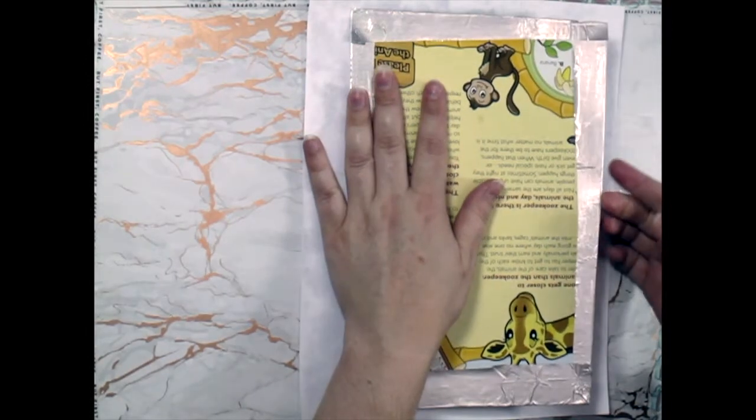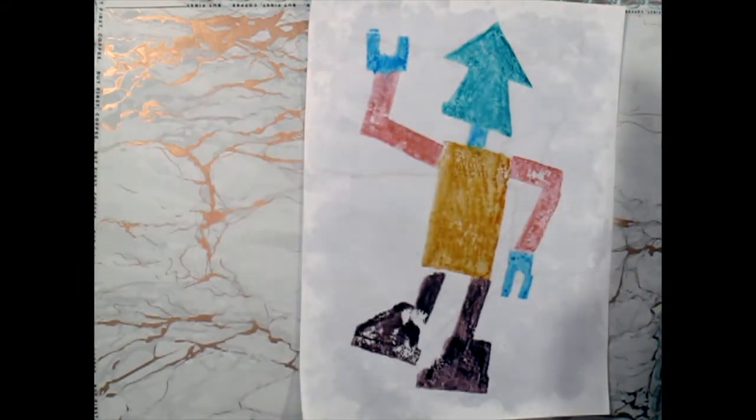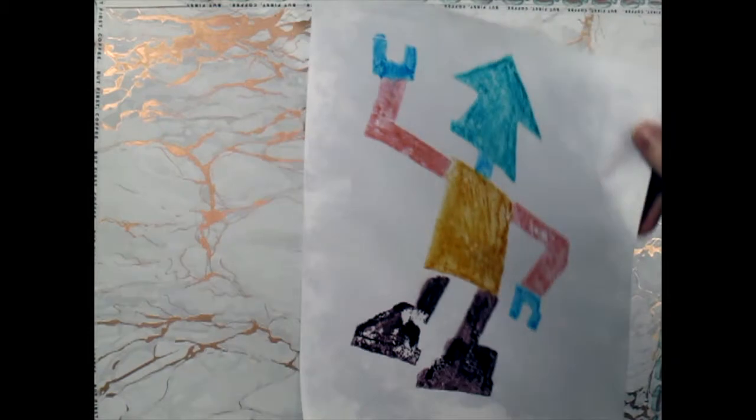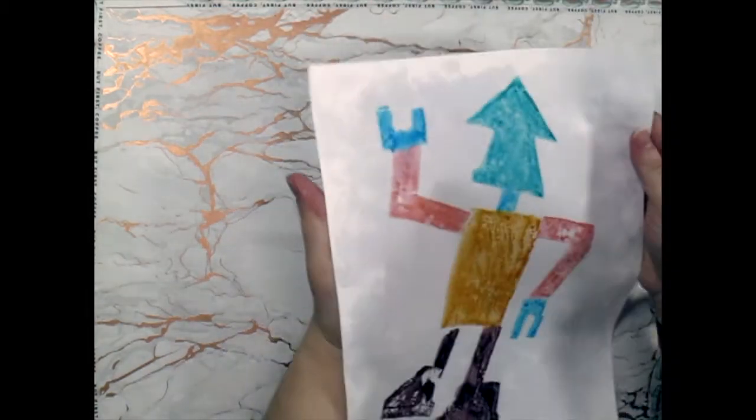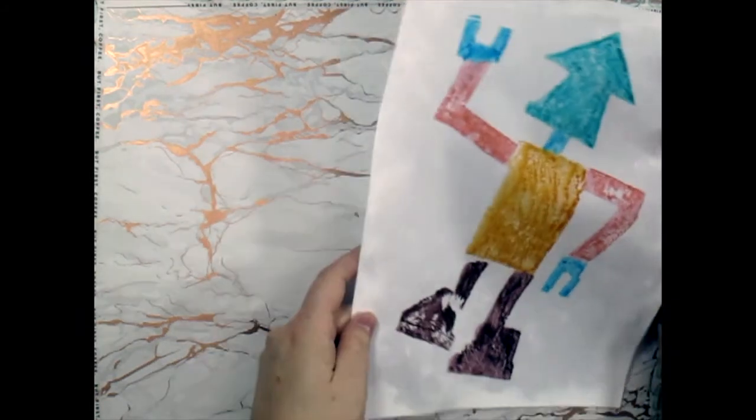I'm going to peel up my plate and there's my robot print. I can see exactly where the paper was still a little too wet because it got a little blurry right there. But this is a really good first print. It came out really well.